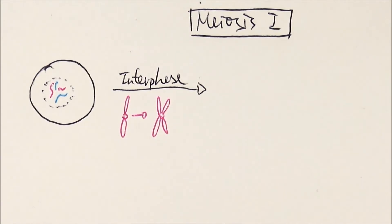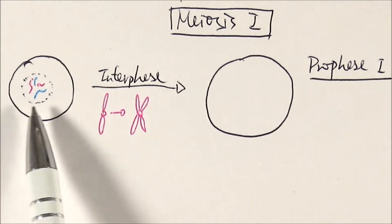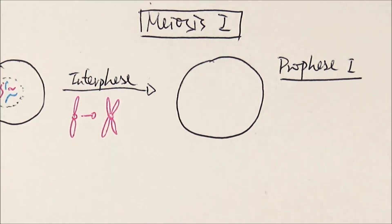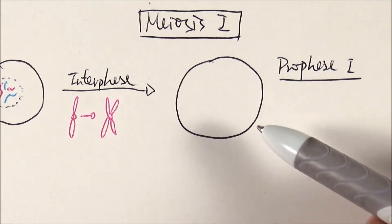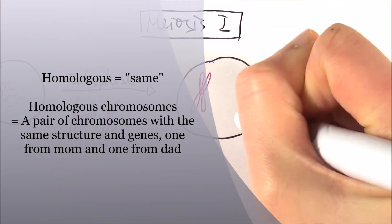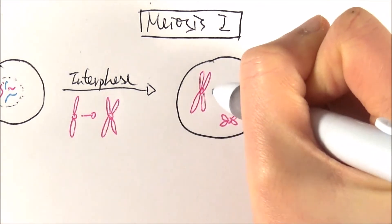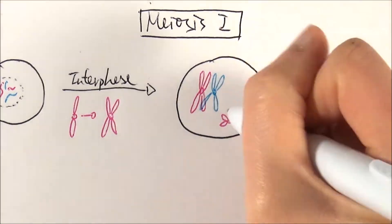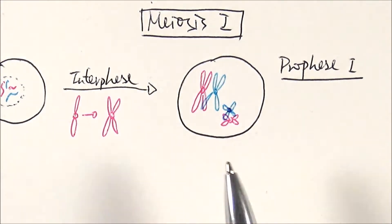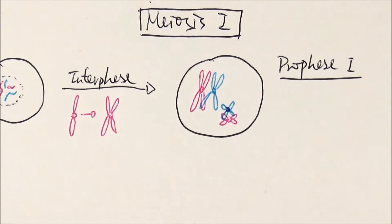We finally get to prophase one. In all prophases of meiosis one and two, it's very similar to prophase in mitosis: the nuclear envelope disappears and the chromosomes coil and condense, becoming visible in the cell. Specifically in prophase one, the homologous chromosomes pair up. Homologous chromosomes refer to chromosomes that are the same type — the big chromosome from mum pairs with the big chromosome from dad, and the small one from mum pairs with the small one from dad. This pairing is called a homologous chromosome pair, or a bivalent.